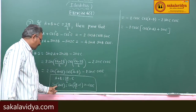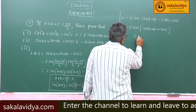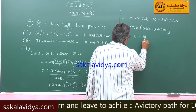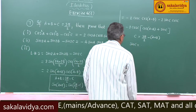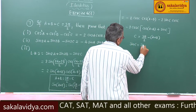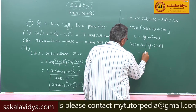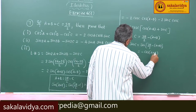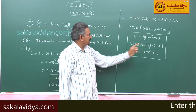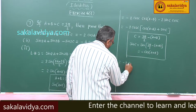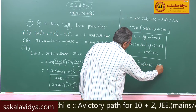Now, as sin(a plus b) equals minus cos c, let us find the value of sin c. Here c equals 3π/2 minus (a plus b), so sin c = sin(3π/2 minus (a plus b)) = minus cos(a plus b). So sin c is replaced by minus cos(a plus b). Therefore this equals minus 2 cos c times [cos(a minus b) minus cos(a plus b)].